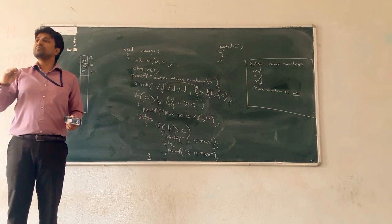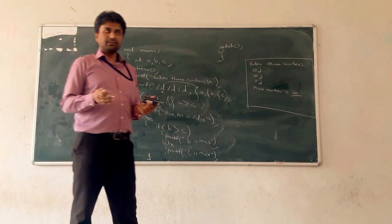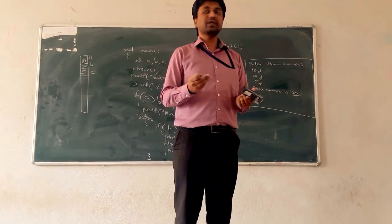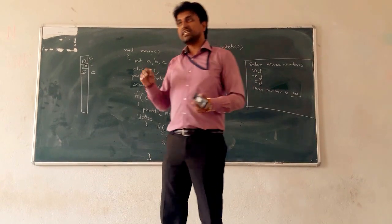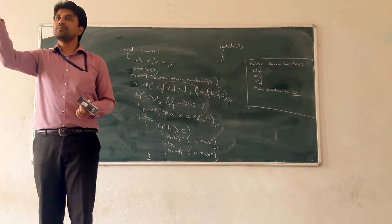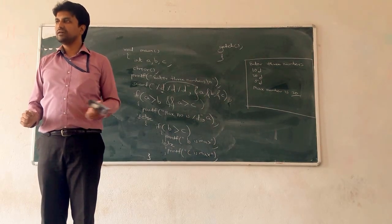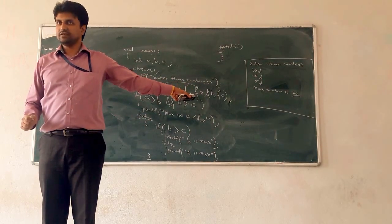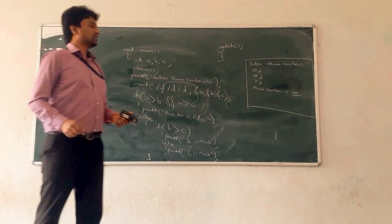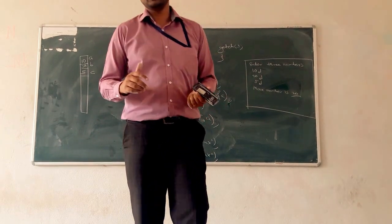If there are more than two conditions — for example, A is max, B is max, or C is max — use nested if-else. If four numbers are there, then again nesting is required. This is all about nested if-else. We will stop here. Thank you.